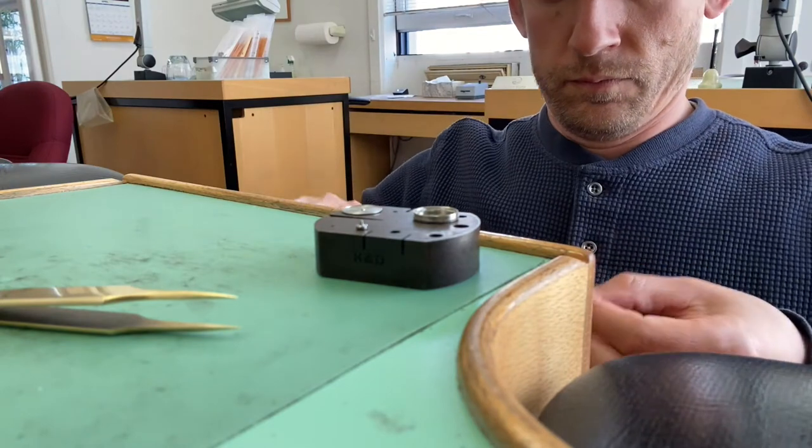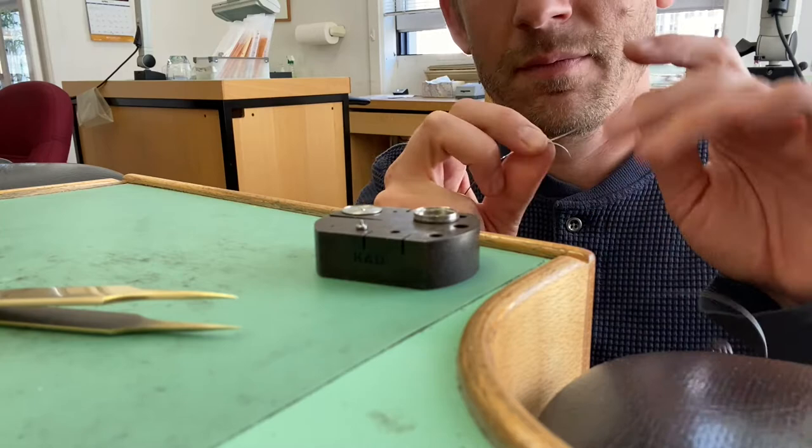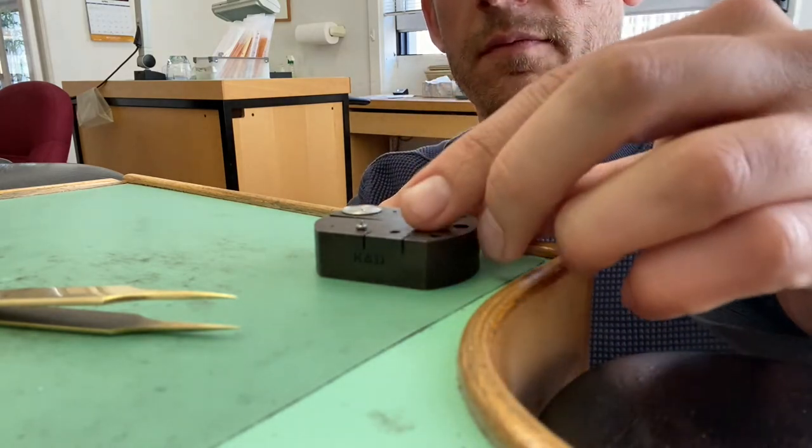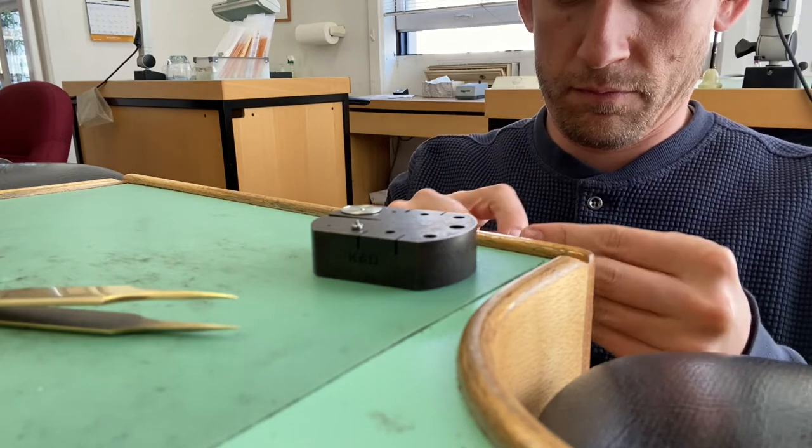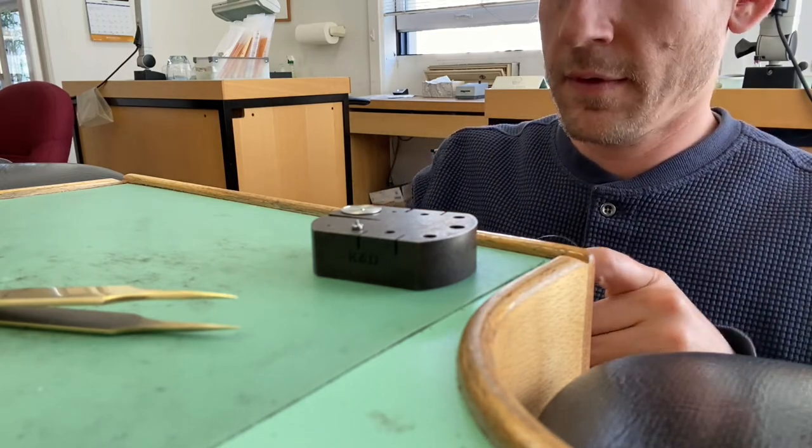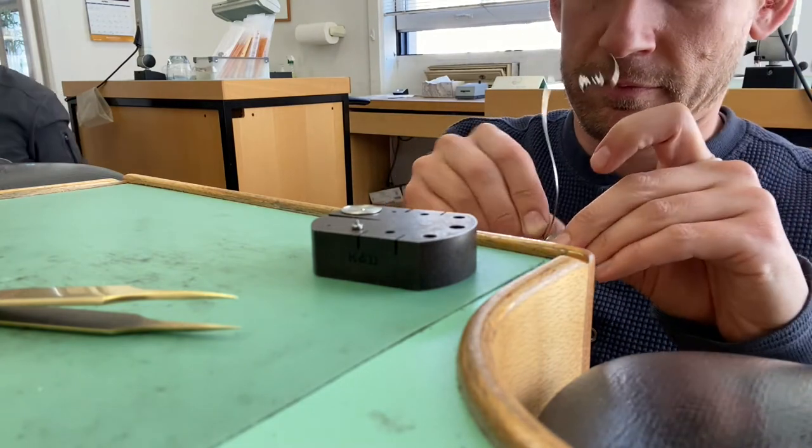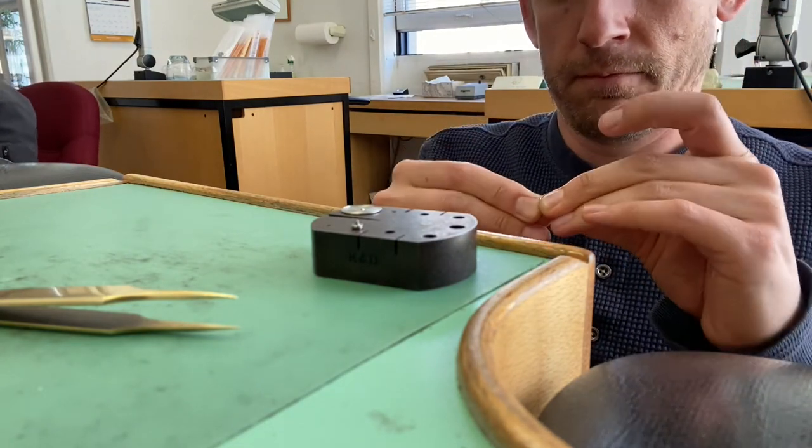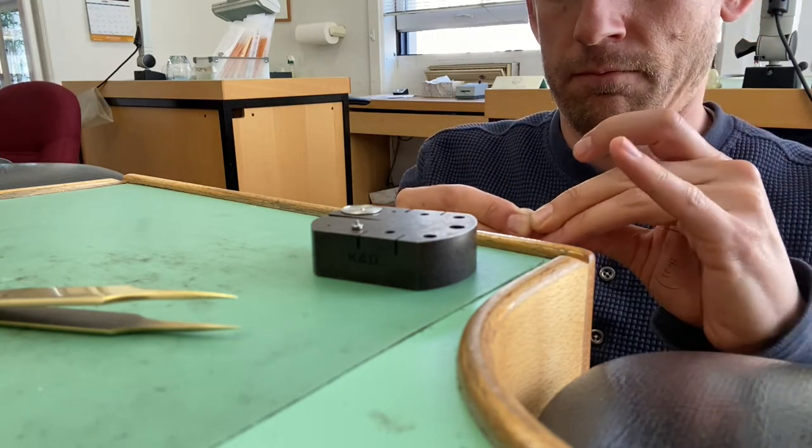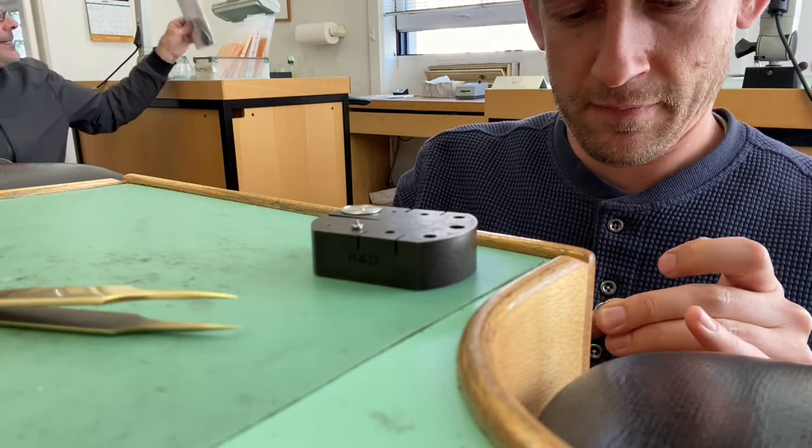So now that you know the orientation of the mainspring, you pull the tail out and it seems a little counterintuitive, but you're gonna want to install it tail first. It's hard because there's a lot of pressure built up onto the spring, but you're just gonna want to kind of force it in there.